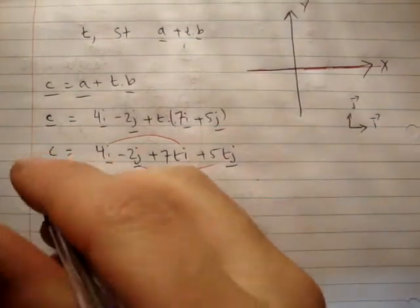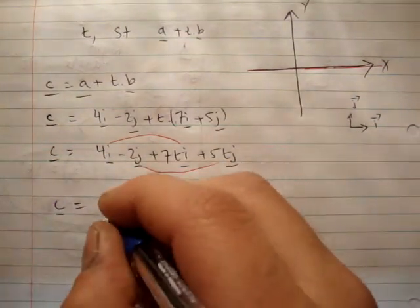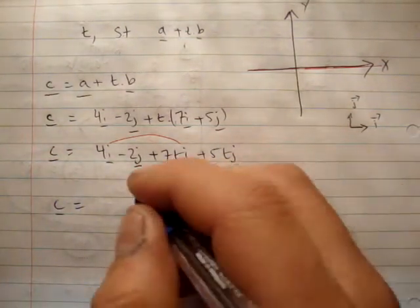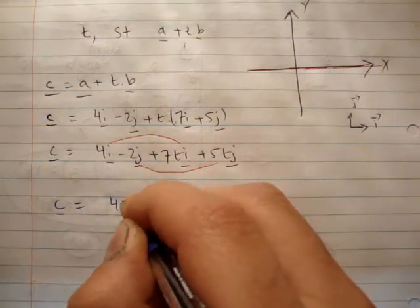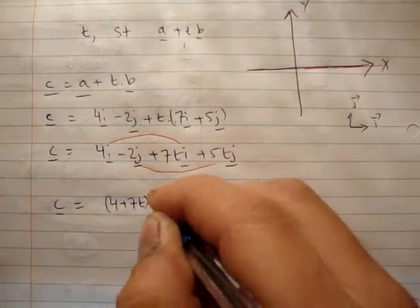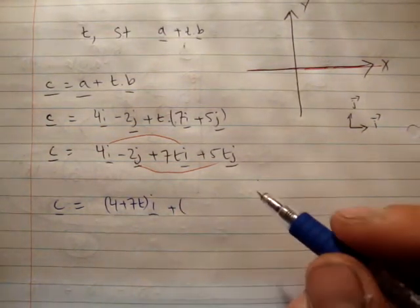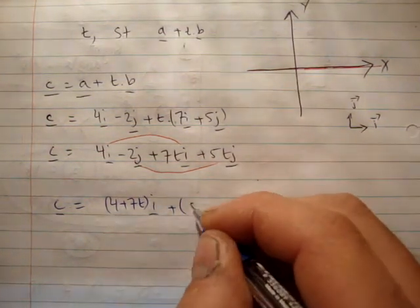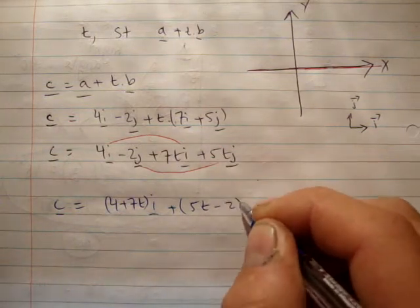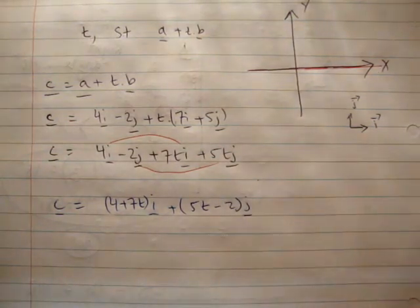And therefore, we get that c is equal to 4 plus 7t in the i-hat direction plus, plus what? 5t minus 2 in the j-hat direction. Alright? Now, what did I say?